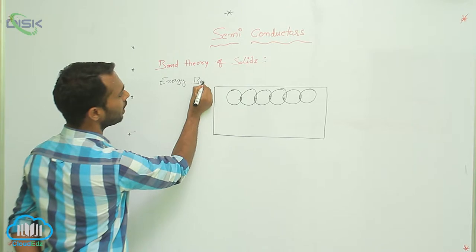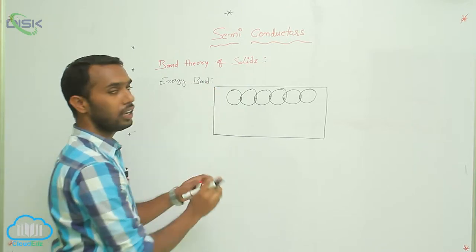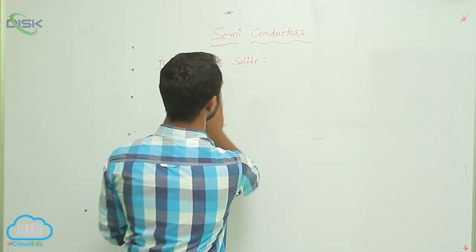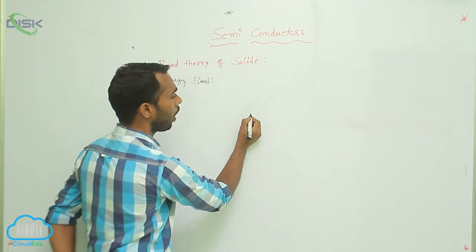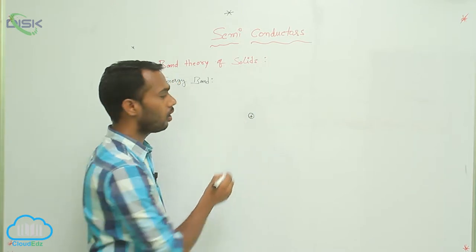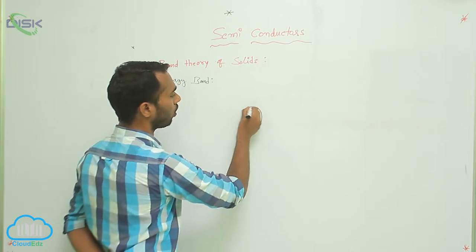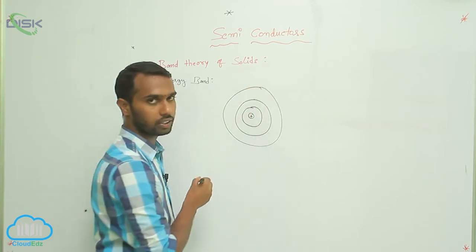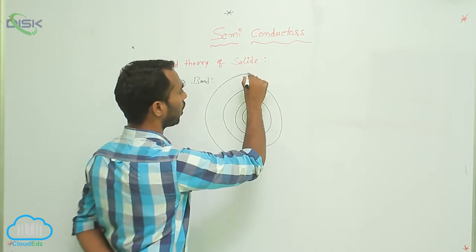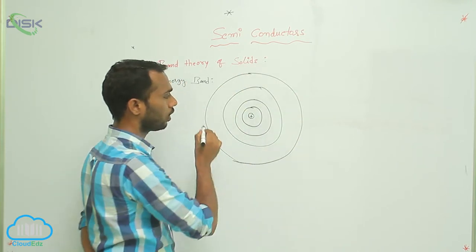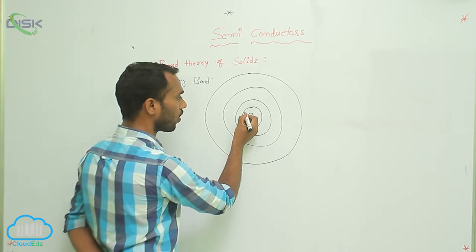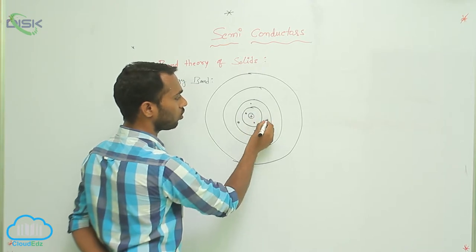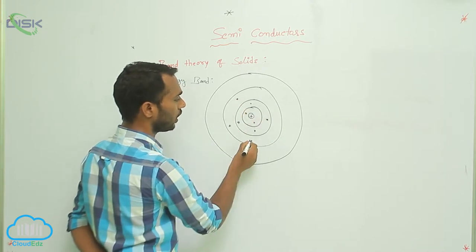What is an energy band? To understand, I am taking two atoms. One atom consists of a nucleus at the center surrounded by orbitals — orbital number 1, orbital number 2, orbital number 3, orbital number 4, and so on. Electrons are present in these orbitals, revolving around the nucleus.